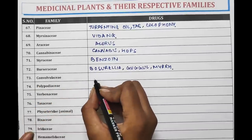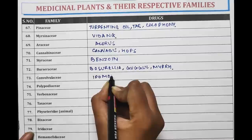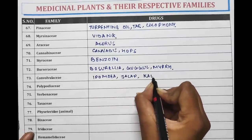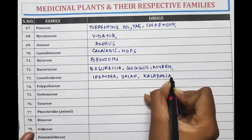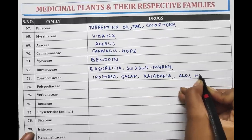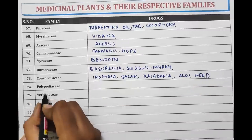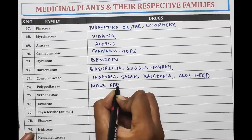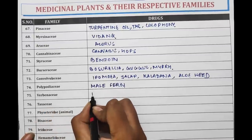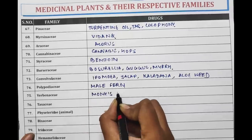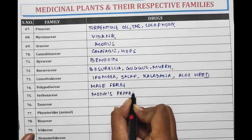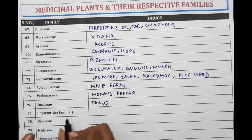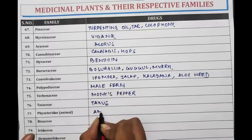Convolvulaceae is the family of Ipomoea, Jalap, Kaladana, and Aloe Weed. Polypodiaceae is the family of Male Fern. Verbenaceae is the family of Monk's Pepper. Taxaceae is the family of Taxus. Physeteridae is the family of Ambergris.